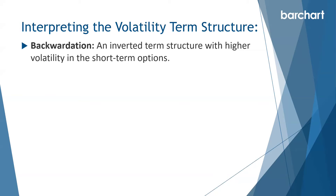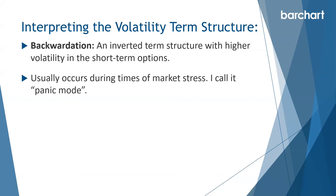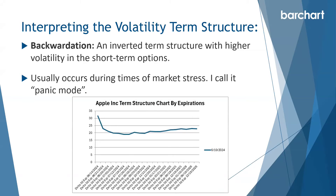Backwardation is an inverted term structure with higher volatility in the short-term options. Usually this occurs during times of market stress — I like to call it panic mode. Bad things happen in backwardation, and that's when we can sometimes see large market corrections. We are seeing some strange backwardation at the moment in a lot of stocks. Here we're seeing some backwardation in Apple where the very short-term options have really high volatility, it drops a little as we go out in time, and then further out it starts to rise again — a strange term structure.